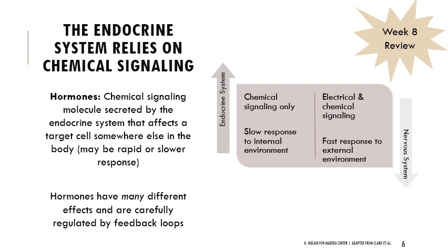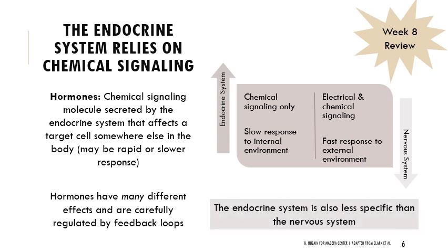There are internal receptors and a lot of automated processes, but often nervous system responses are in response to the external environment. The endocrine system is a lot less specific - hormones get secreted and you hope they end up in the right spot. The nervous system is very precise, with very precise connections between cells and carefully controlled numerically. We'll get into that when we talk about action potentials.